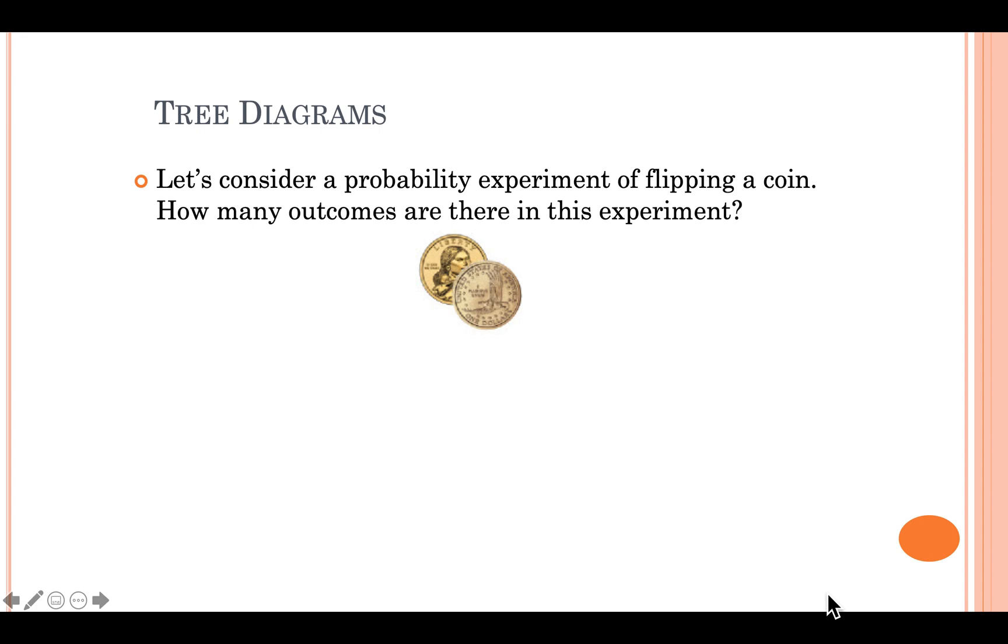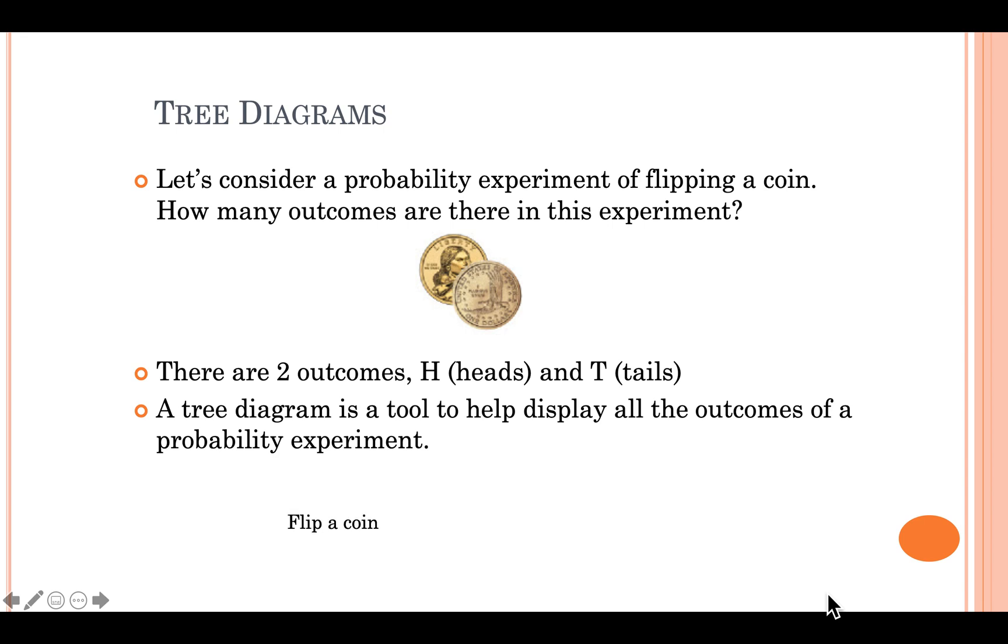Well, when you flip a coin, there are two outcomes. You can either get heads or you can get tails. So a very simple tree diagram for this probability experiment demonstrates the event. And then from the event, there are two branches that are going to branch out to the two outcomes. I'm abbreviating these outcomes H for heads and T for tails.